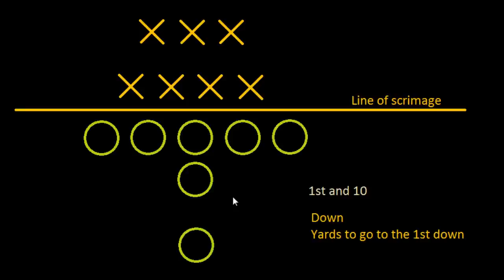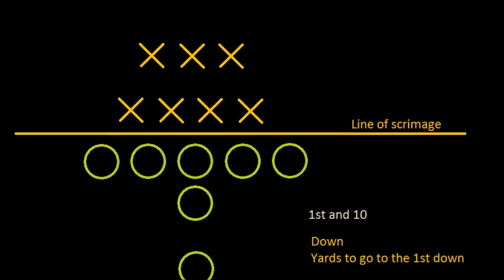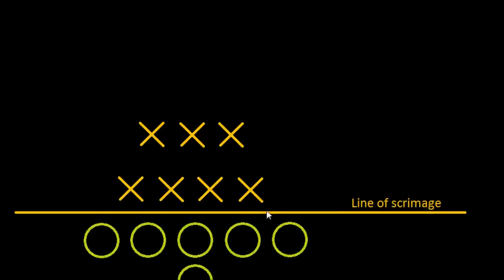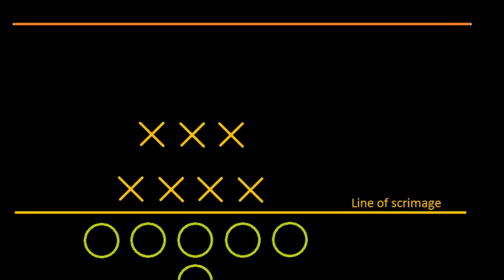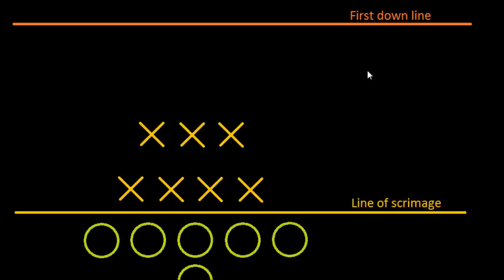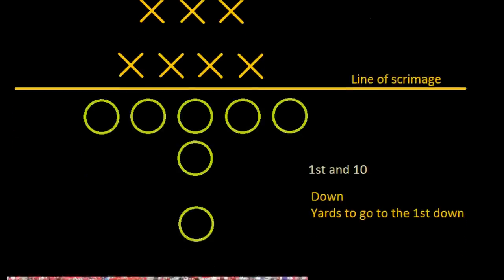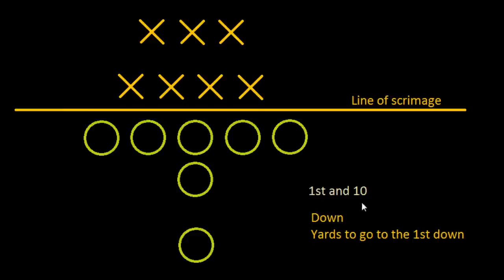If they can gain those ten yards, they go back to first down and get four more new tries. On the football field, we have our line of scrimmage, and we count ten yards down the field — that's our first down line. Sometimes on TV they'll put that line on the field, probably in yellow. If the offensive team can get the ball past the first down line, they will get a new set of downs.